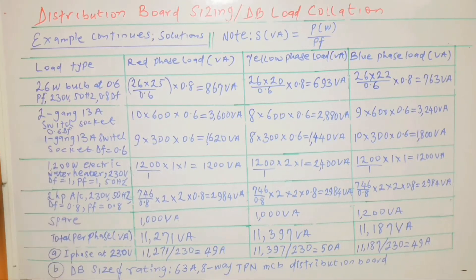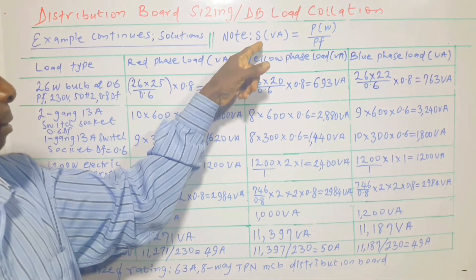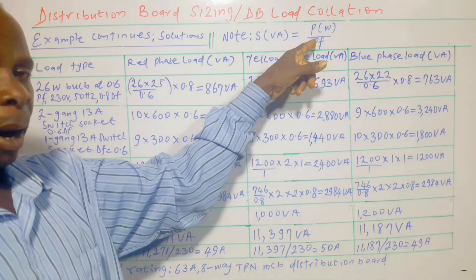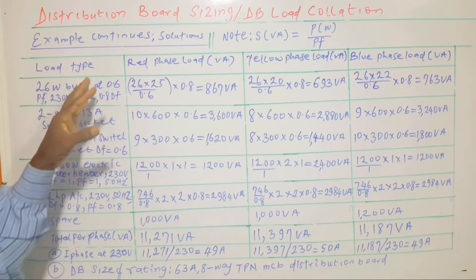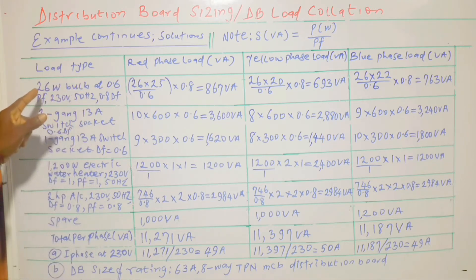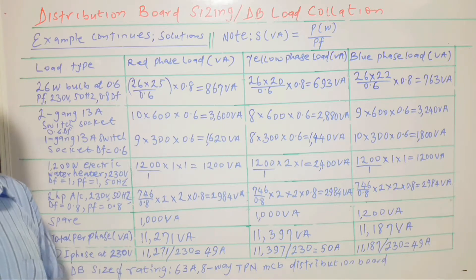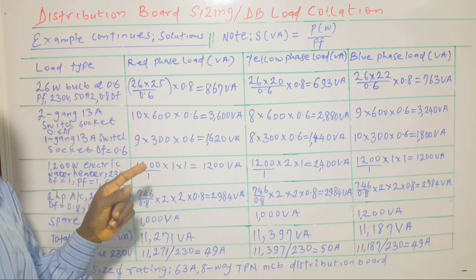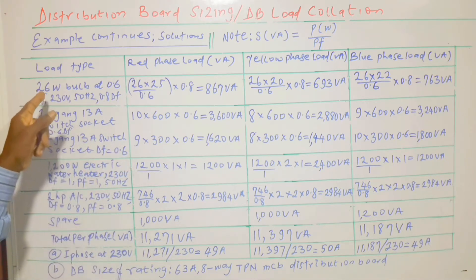The solution: note that the apparent power S in VA equals the active or real power in watts divided by the power factor. That is the major factor in what is being done here. For example, we have a 26-watt bulb at 0.6 power factor. The fact that all the bulbs will not be switched on at the same time means we introduce a diversity factor — a value less than 1 — which is multiplied by the total power requirement.